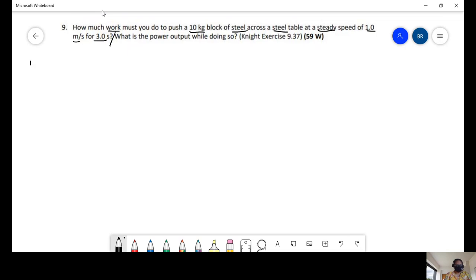Strategy: always make a drawing. So we're going to make a drawing of this. We're going to have a horizontal surface, we're going to have our block, this is 10 kilograms, and this is steel against steel.